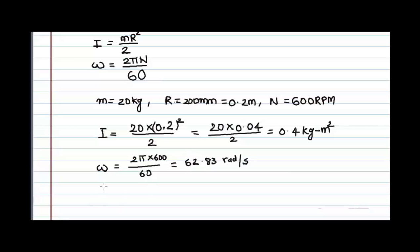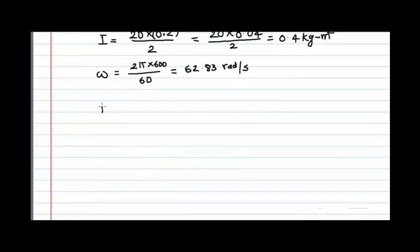Now substitute these I and omega values in the kinetic energy equation. That is E is equal to half I omega square, equal to half into 0.4 into 62.83 whole square, which is equal to 790 joules.